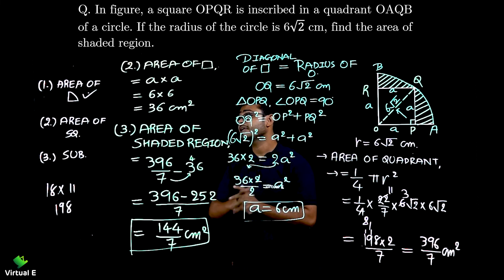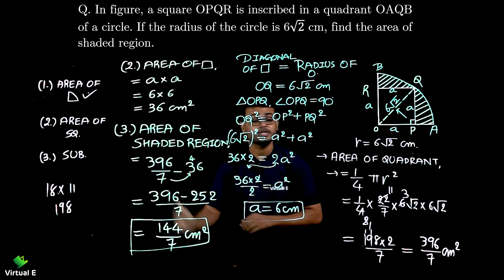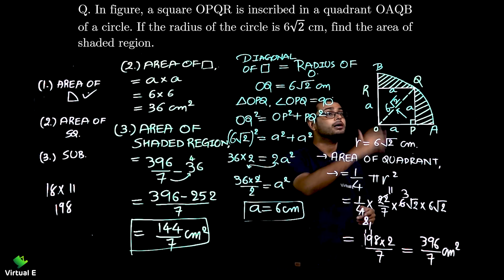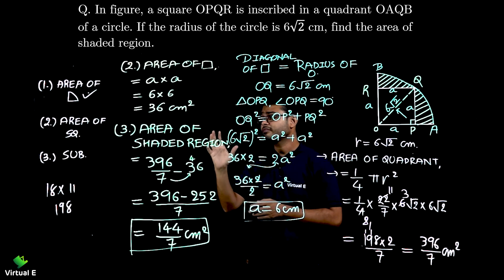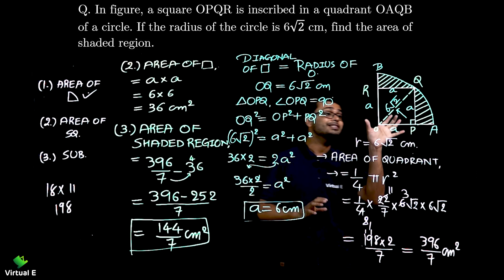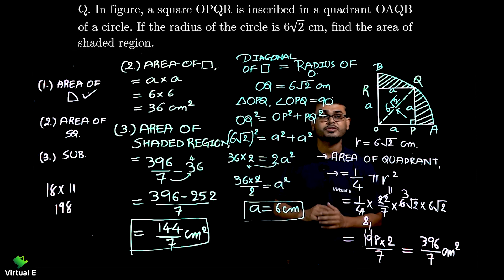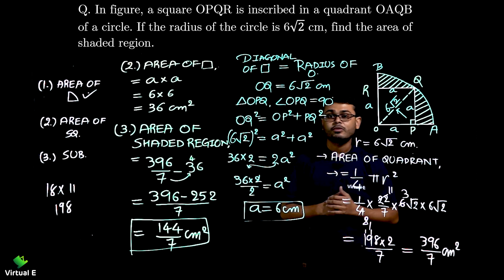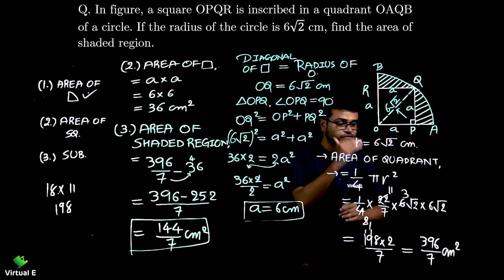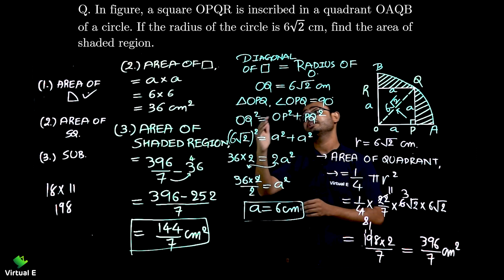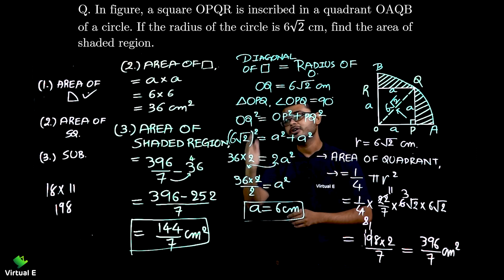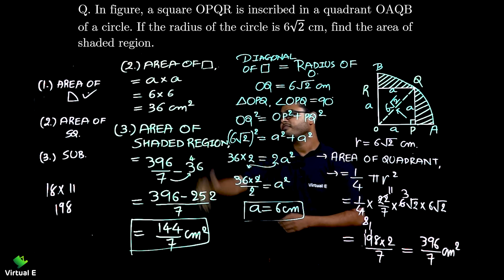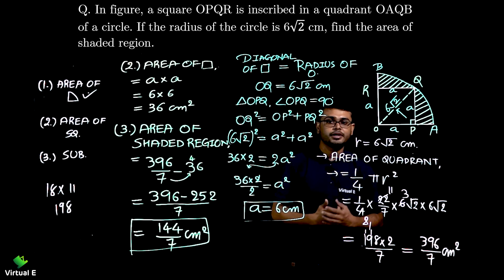To recap: first identify the shapes — a quadrant and a square inscribed in it. The side of the square was not directly given, but the diagonal was indirectly available as the radius. So we found the area of the quadrant, then used the diagonal to find the side of the square, found the area of the square, and finally subtracted to get the area of the shaded region.